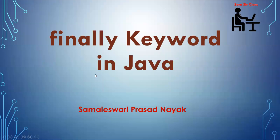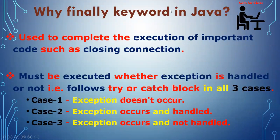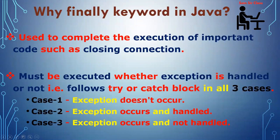Let's see through the slides why finally keyword is required in Java. It is used to complete the execution of important code. If any exception is generated and you are unable to execute some important code like closing of files or closing of any connection, then the finally block will help you. It must be executed whether exception is handled or not, following the try-catch block. Three cases: exception doesn't occur but finally block will execute; exception occurs and is handled, still finally block will execute; exception occurs and is not handled, but finally block will execute.